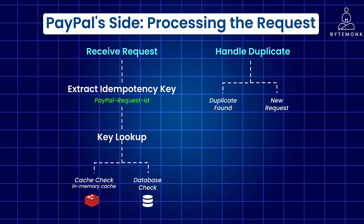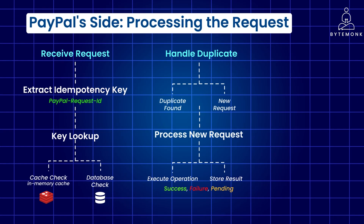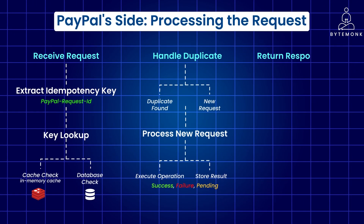If no duplicate is found, the request is treated as new. PayPal executes the payment creation operation — for example, authorizing the payment or capturing funds. It then stores the result of the operation — success, failure, or pending — along with the idempotency key in its cache and database. This is crucial for handling potential future retries. PayPal then sends a response back to the client indicating success, failure, or pending.